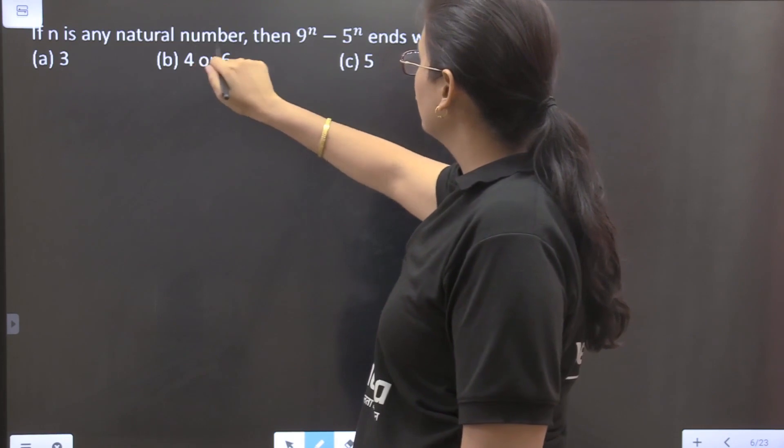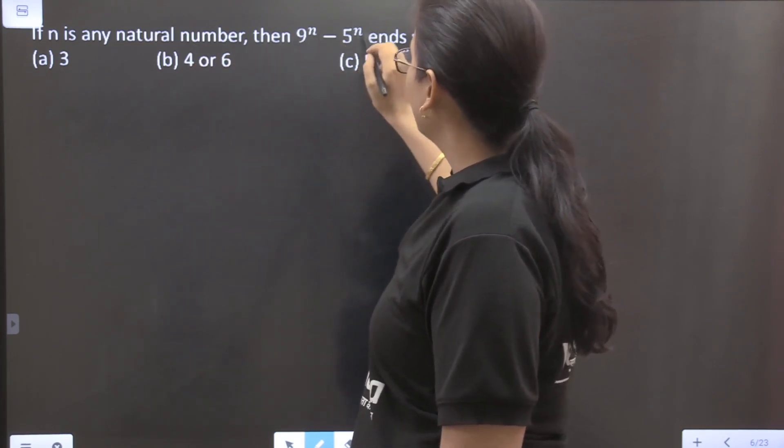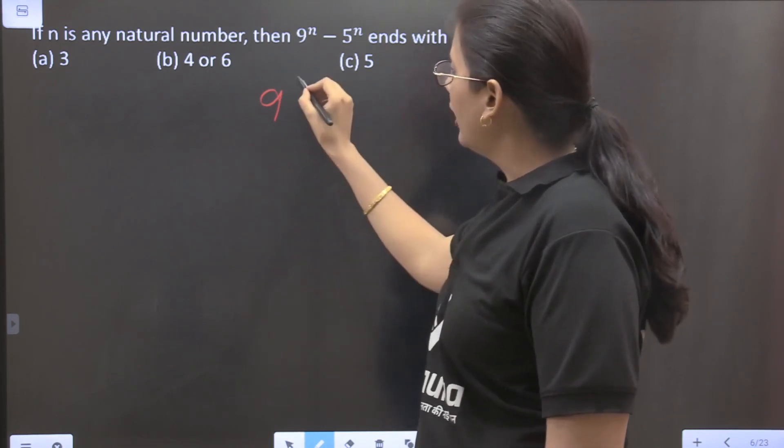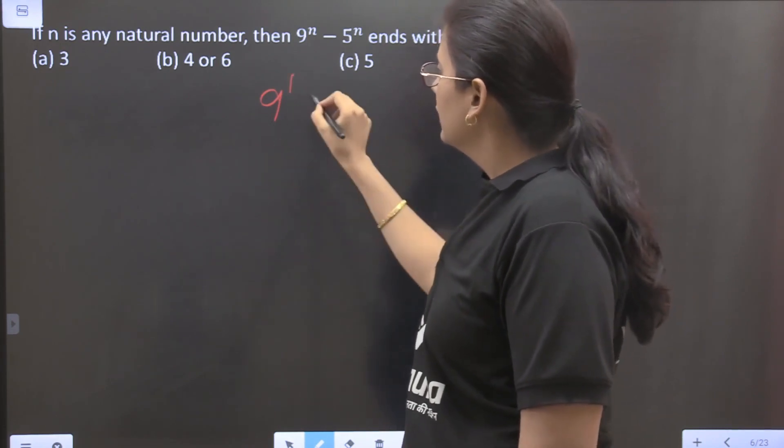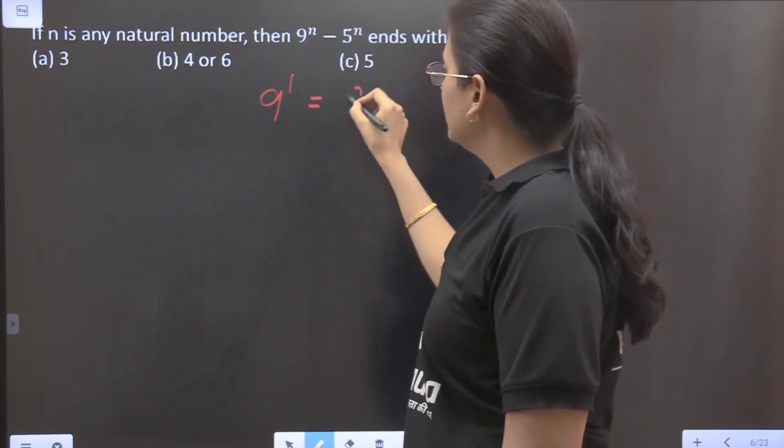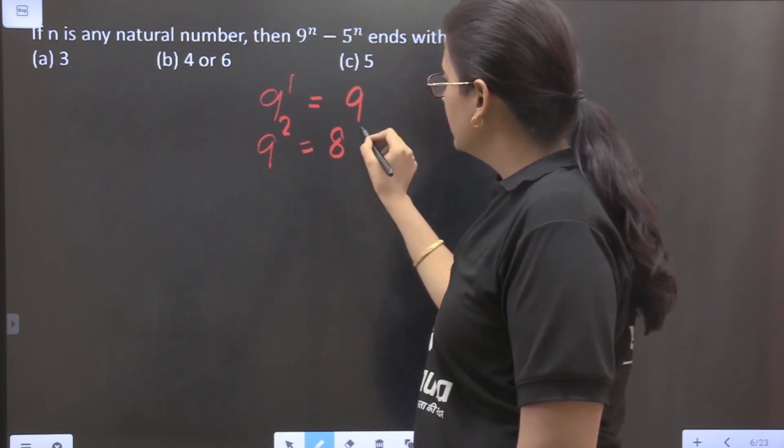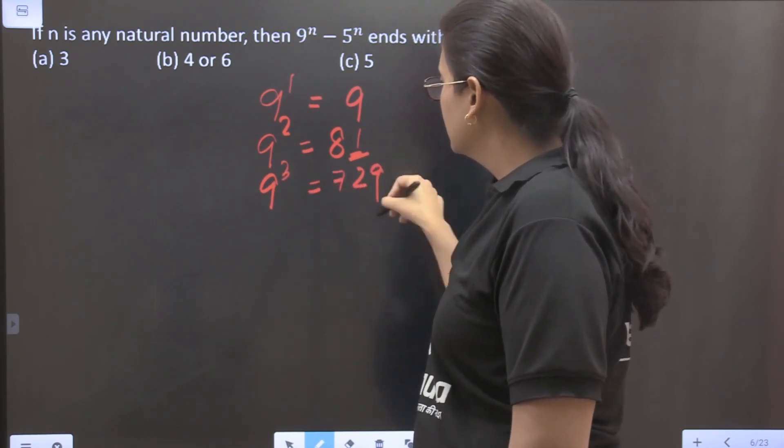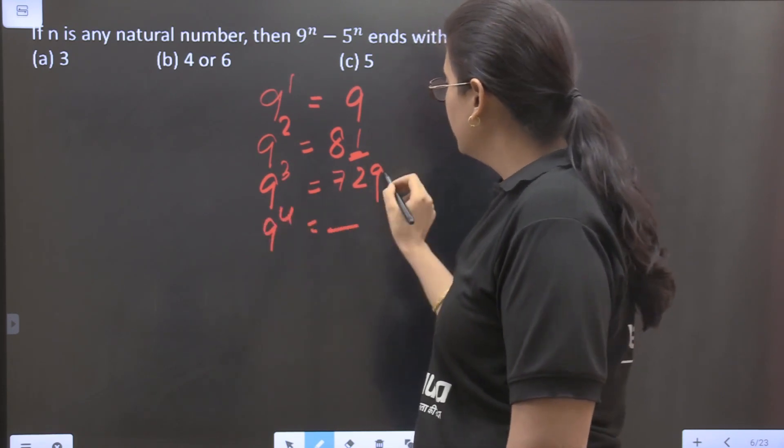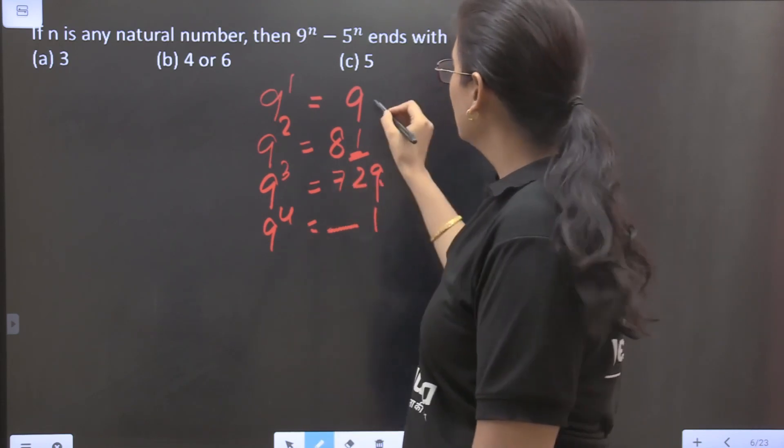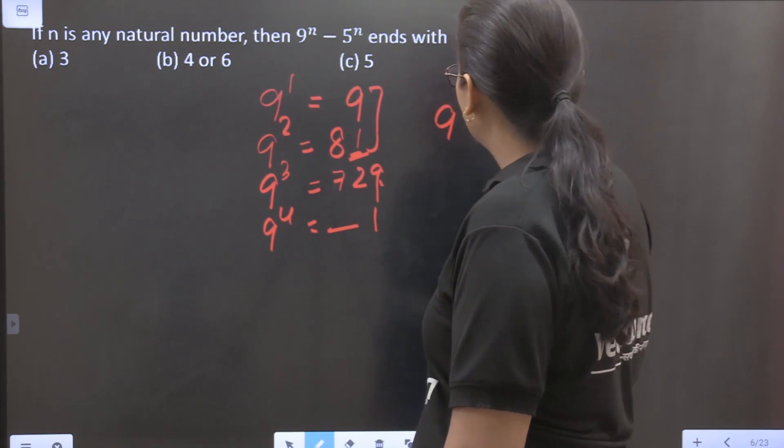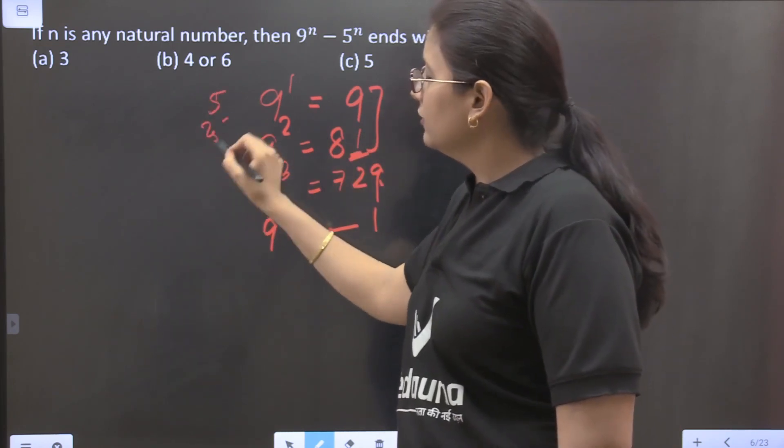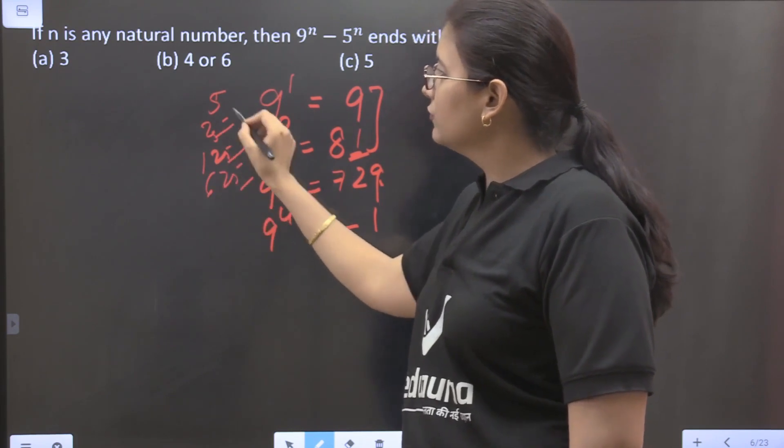Now coming to the next question. If n is any natural number then 9^n - 5^n ends with? So we all know that 9 whenever it will be having any power, like it is having the power of 1 then the unit's place will always be, sorry it will be 9. Then if it is 2 then this will be 81, unit's place is 1. If it is 3 then 81 into 9, the unit place will be 1. 9 to the power 4, then it will be something but here 9 into 9 will be 81, so the unit's place will be 1.